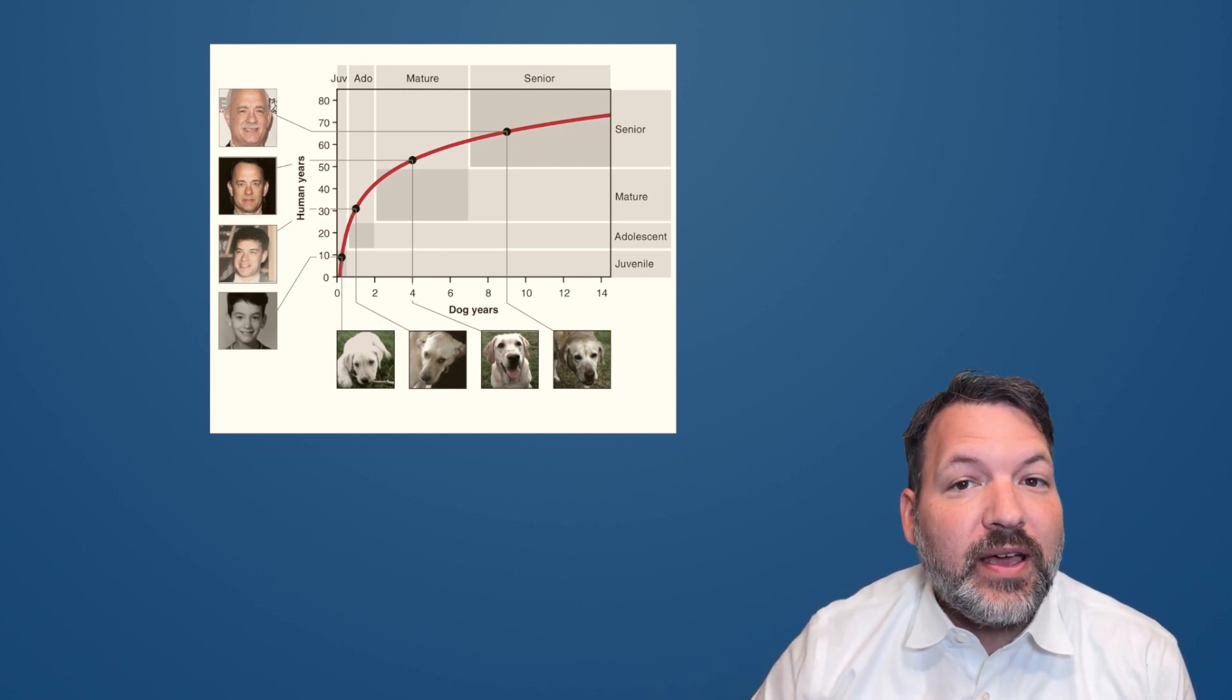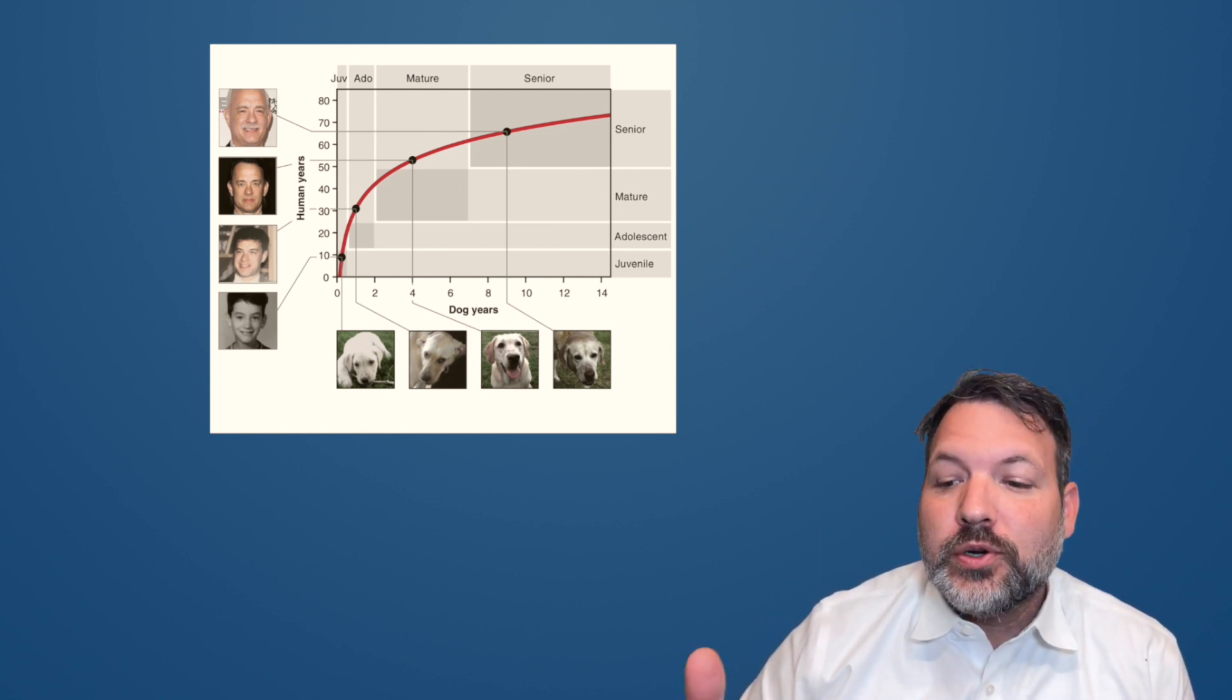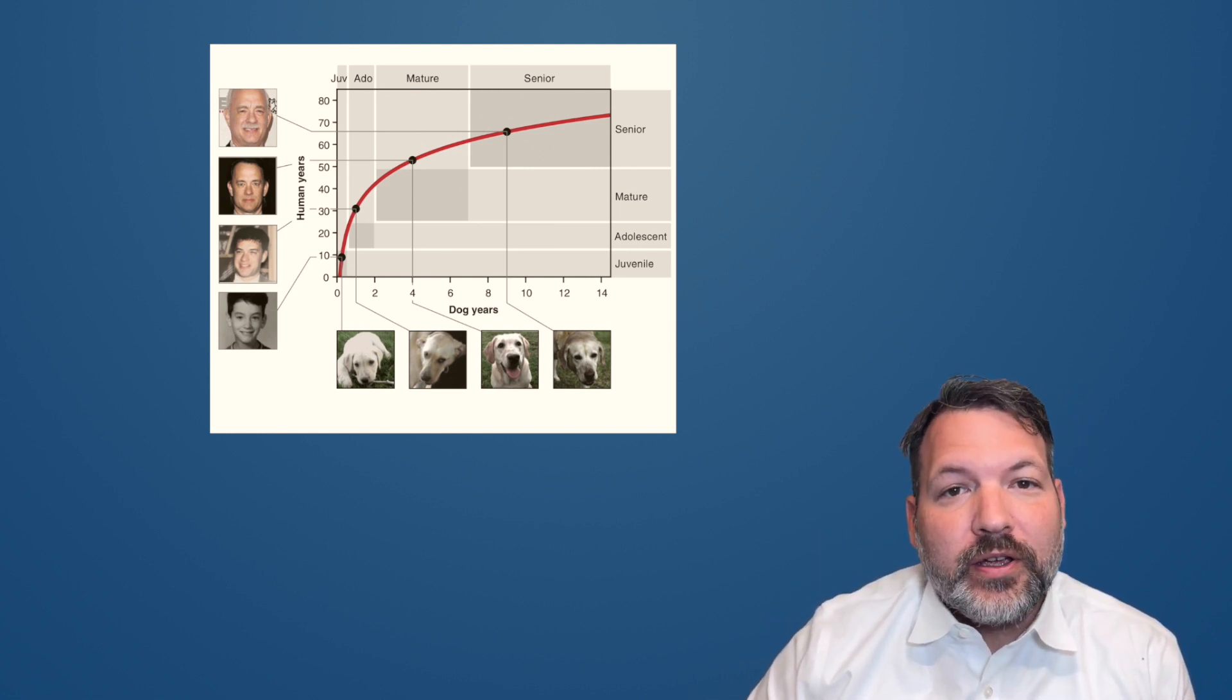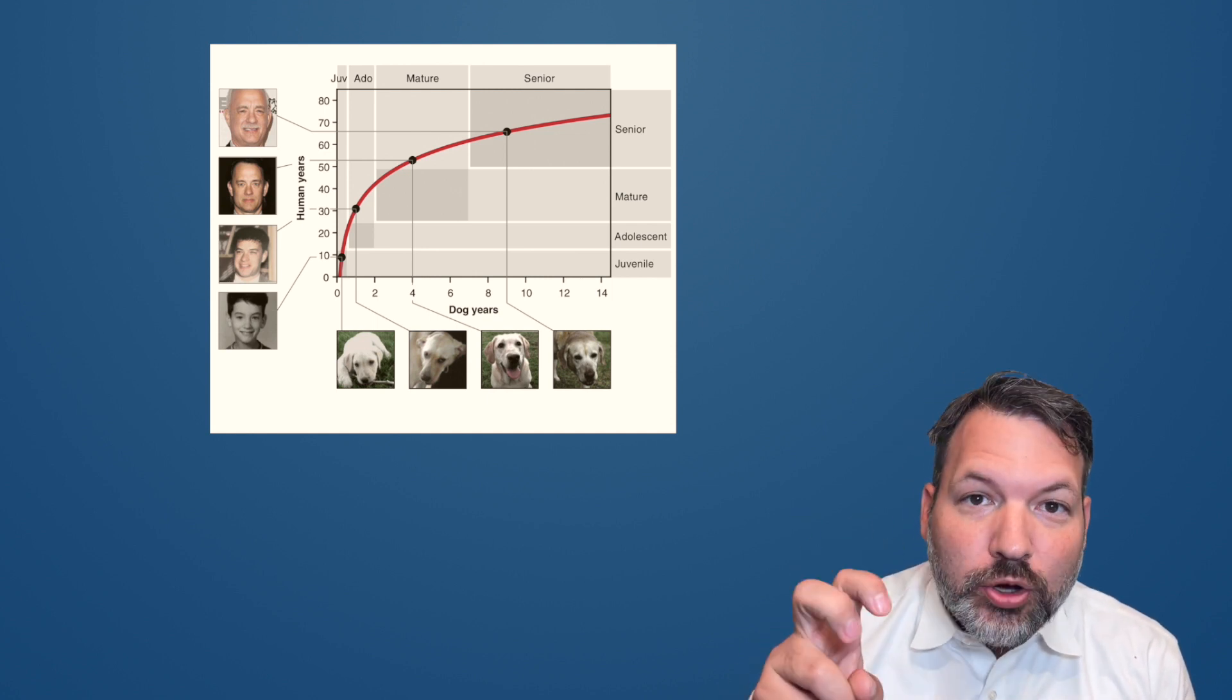That is, you take your dog's age, you multiply by seven, and that gives you back some kind of human years age. This would be a linear function where the dog's age is your independent variable x, the slope is seven, and the result, the y variable, is the dog's age in human years.